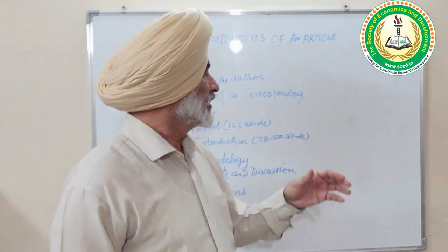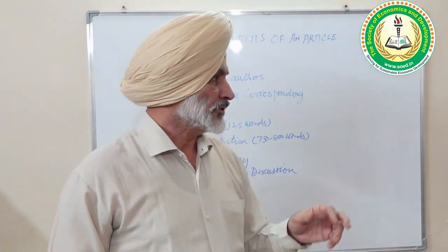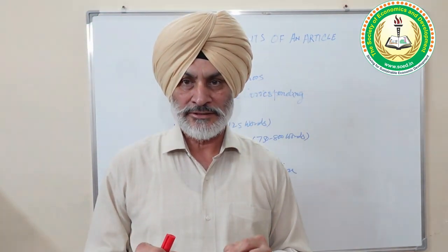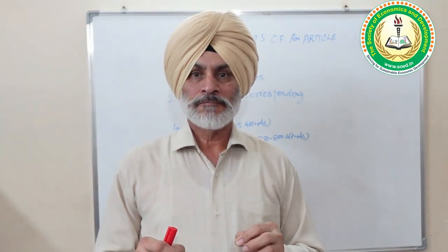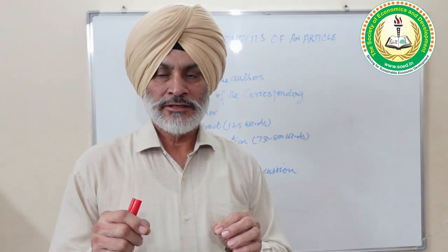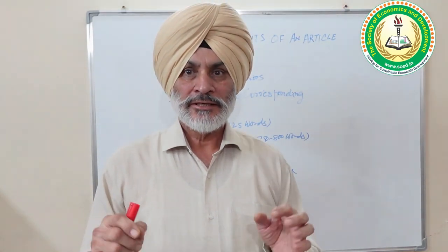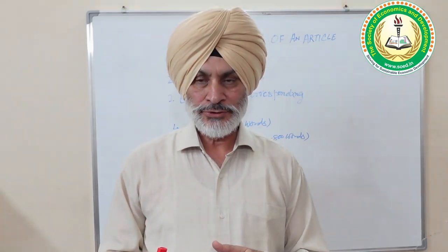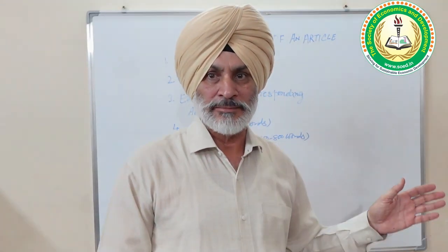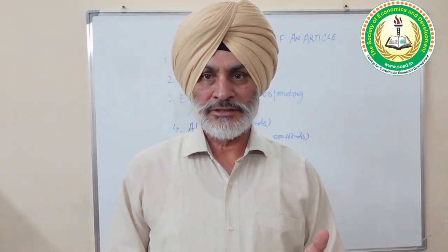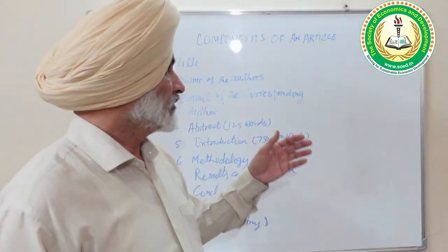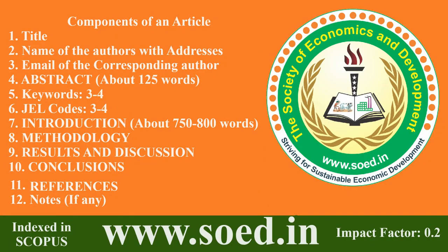Next come the names of the authors. Give the complete names of all authors along with their official addresses, including their designation, department, name of the institution, place, and state — which you can write in brackets. This ensures that when a copy of the journal is sent, it reaches the right person. You must also provide the email of the corresponding author, which is very important.